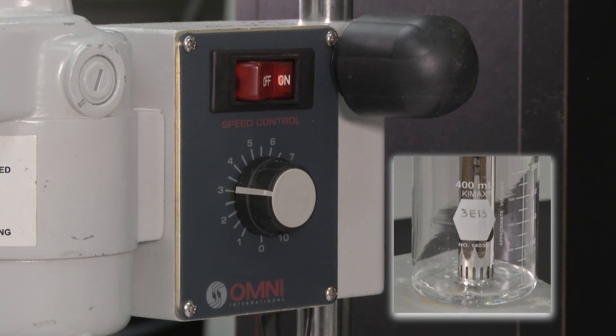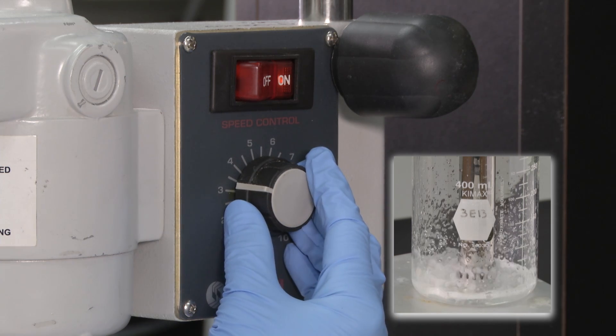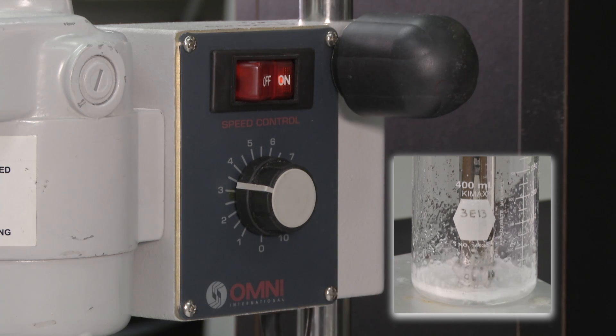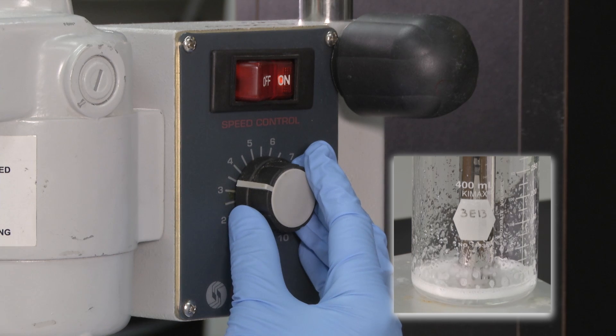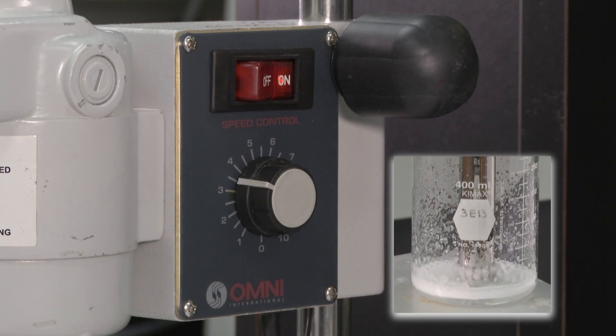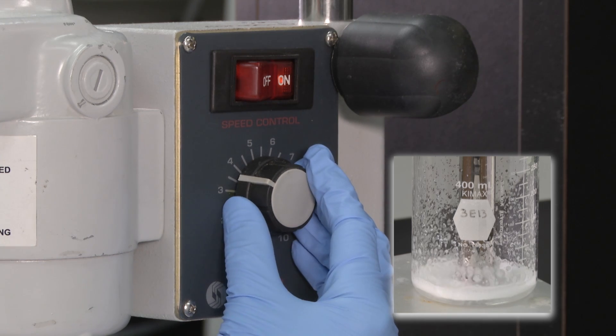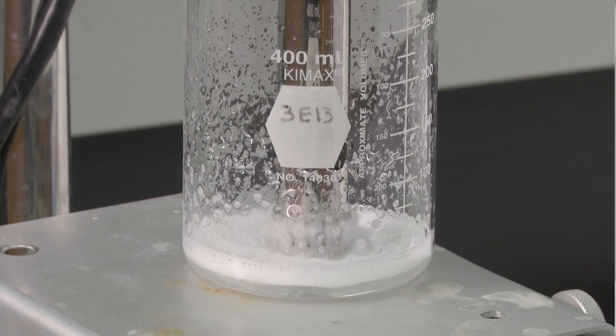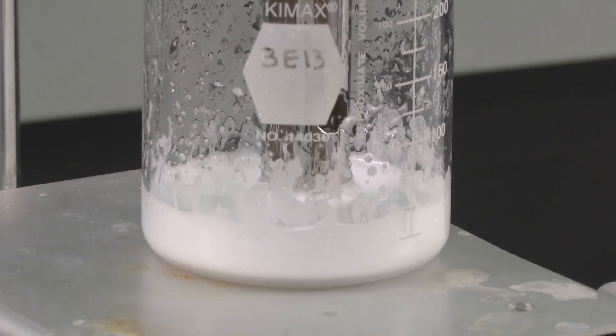Turn on the homogenizer at speed 3. Then increase the speed a quarter of the way to speed 4 every 15 seconds until speed 4 is reached. Allow the solution to foam for a total of 5 minutes.